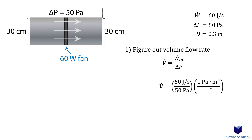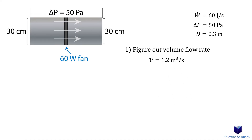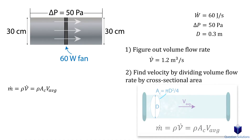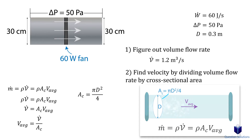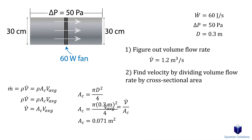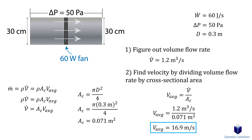To figure out the average flow velocity, we use the mass flow equation, cancel density, and isolate for average velocity — which equals volume flow divided by the cross-sectional area. The cross-sectional area is found using the diameter of 0.3 meters. Plugging in these values gives us the highest possible average flow velocity in the duct.